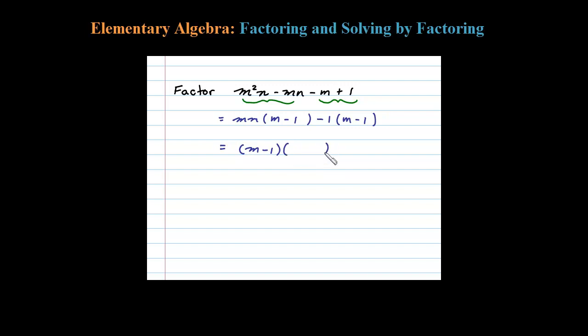So now when I factor out the M minus 1, I have to say, alright, then what's left? Factoring out M minus 1 from the first term, you're left with MN, and then the second term minus 1. And there you have it, factored by grouping.